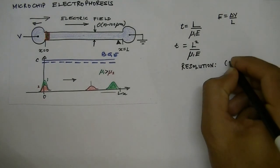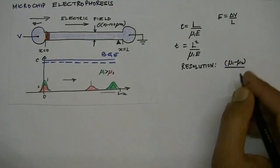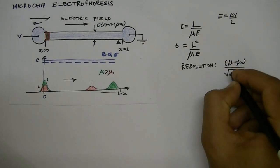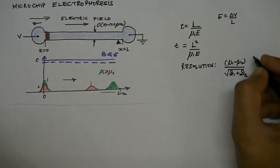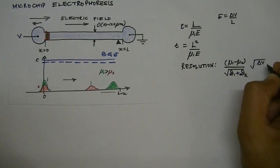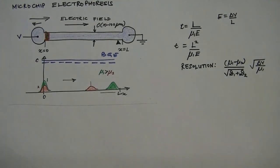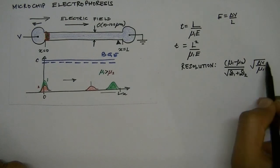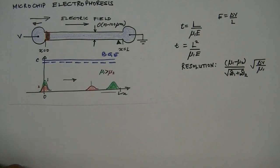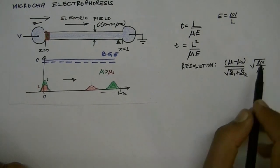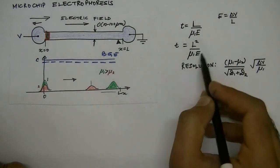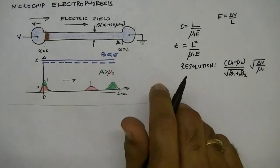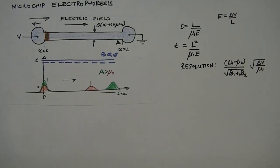The resolution is given by the relative mobility (mu1 minus mu2) between two adjoining zones, over the square root of diffusivity times the voltage applied across the channel over mobility. From this we can see that for given species, resolution depends only on the voltage drop applied across the channel. So if you apply the same voltage you get the same resolution, but if you reduce the length of the system the time will reduce significantly.